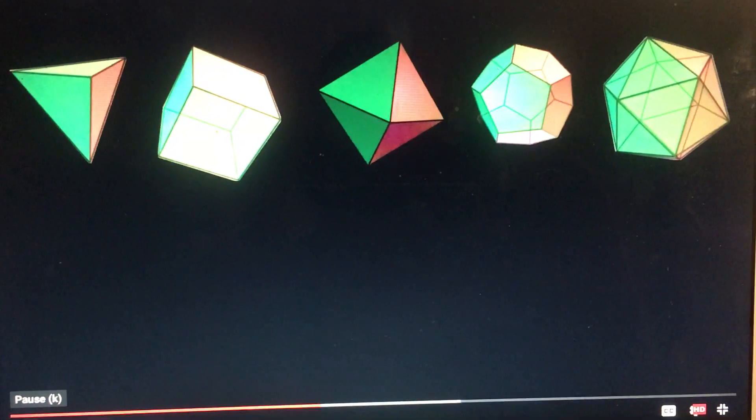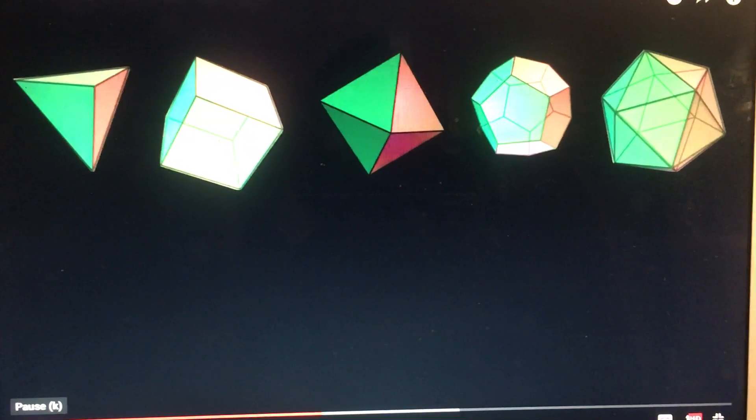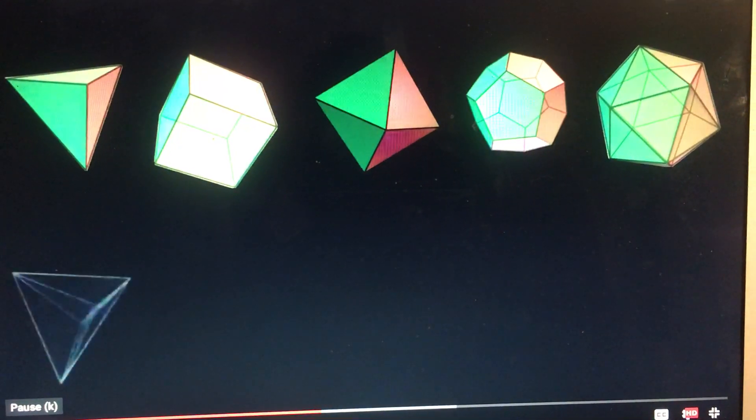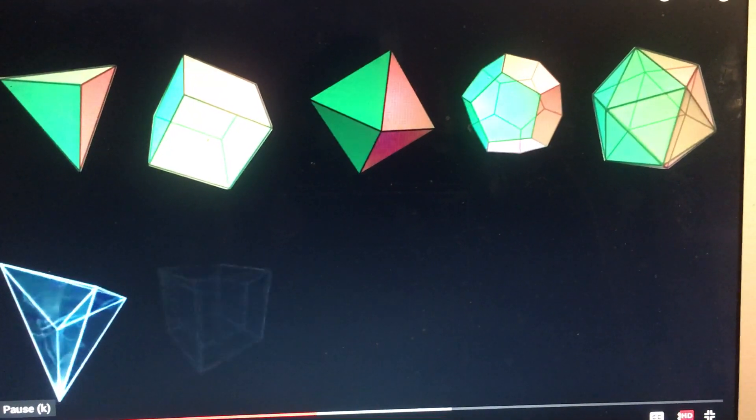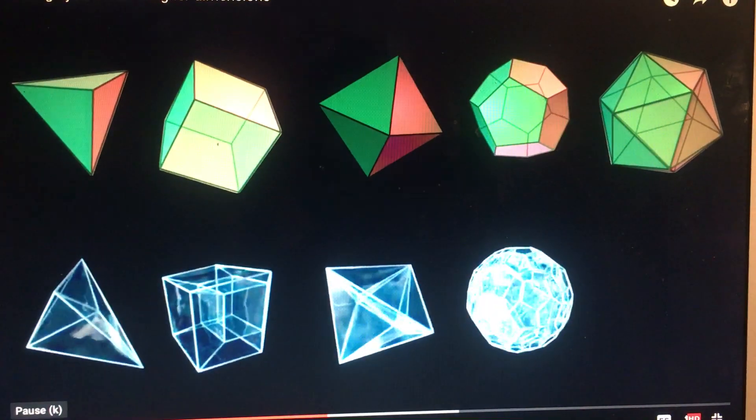The answer is yes. In fact, every Platonic solid in three dimensions has a four-dimensional counterpart. If you join tetrahedrons together at three to an edge, you get the hyper-tetrahedron. There's also the hypercube, hyper-octahedron, hyper-dodecahedron, and the hyper-icosahedron as well.